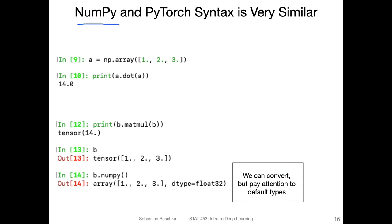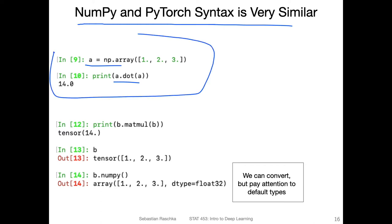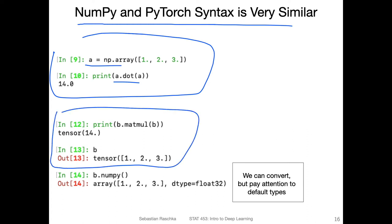Here's another quick example showing that NumPy and PyTorch are indeed very similar. I'm showing how you compute a dot product using the simple vector 'a'. We compute a.dot(a) — note that we don't need a transpose here because this is a one-dimensional array. In PyTorch, we compute b.matmul(b). Nowadays you can also do b.dot(b) — it's the same thing.